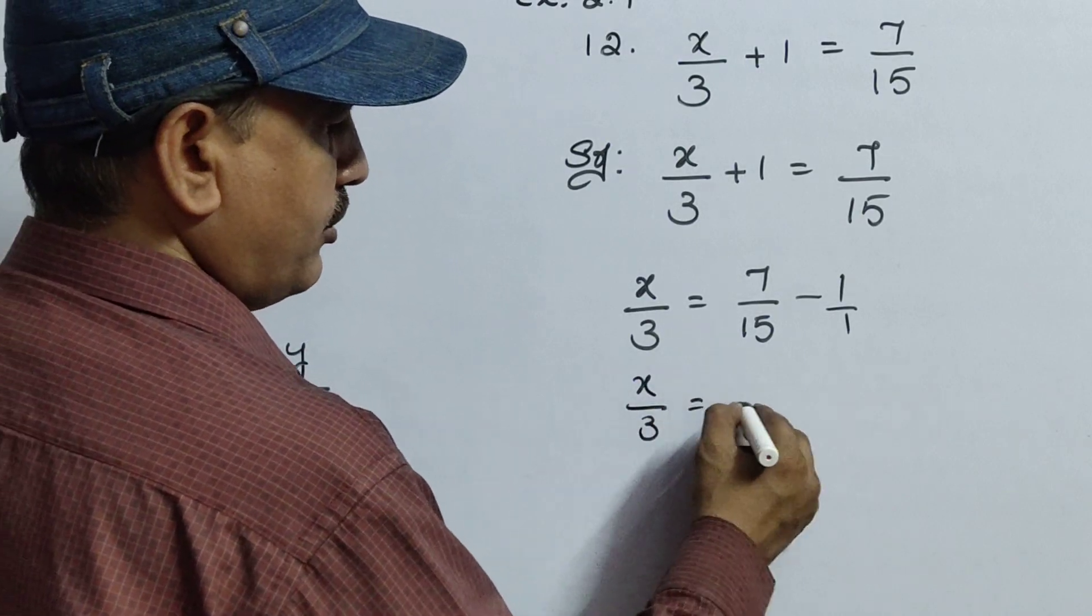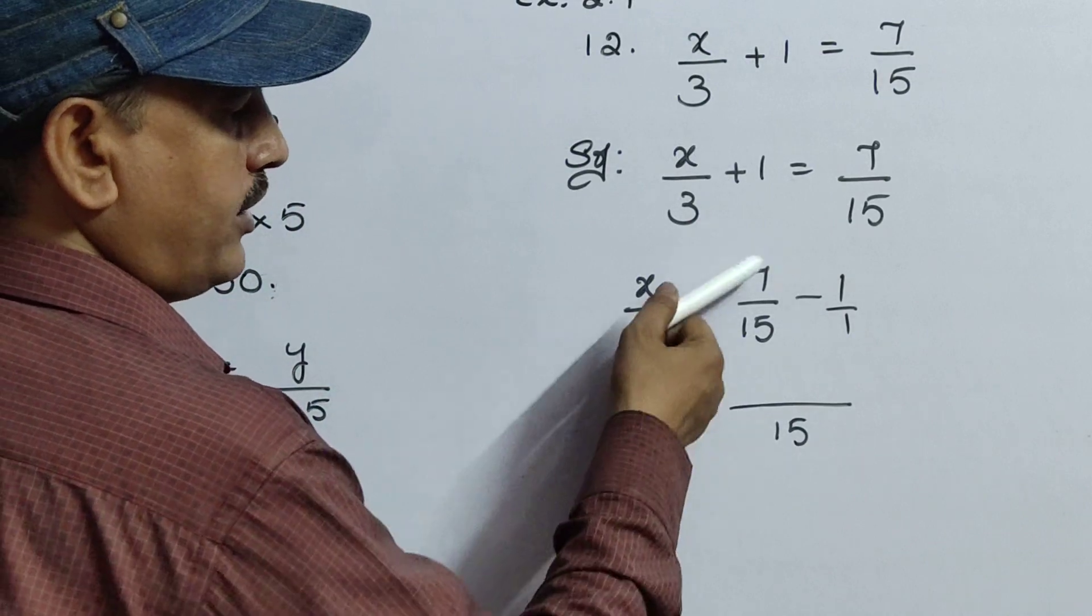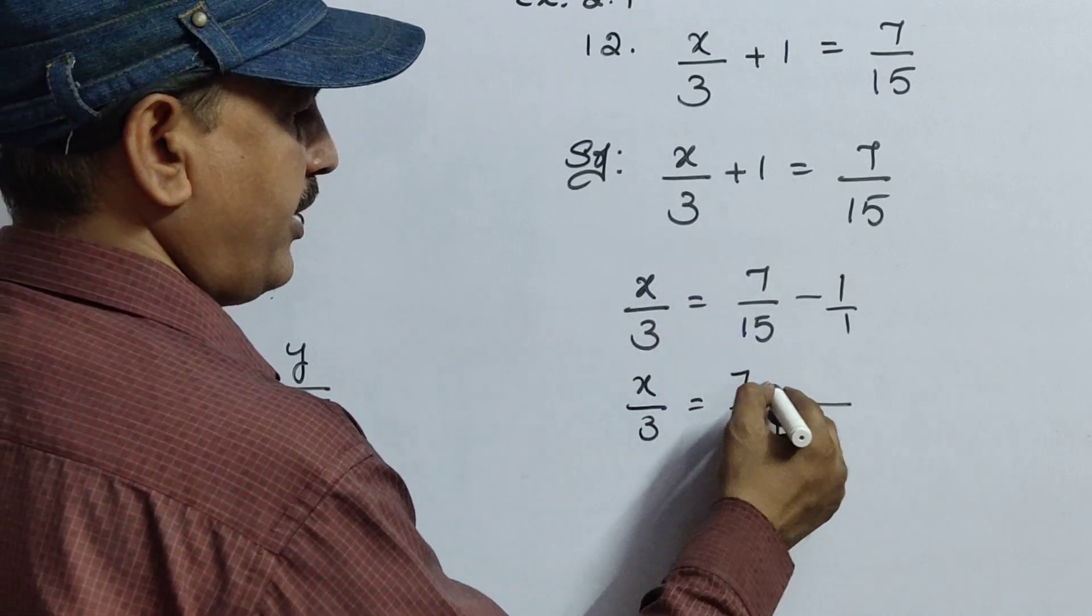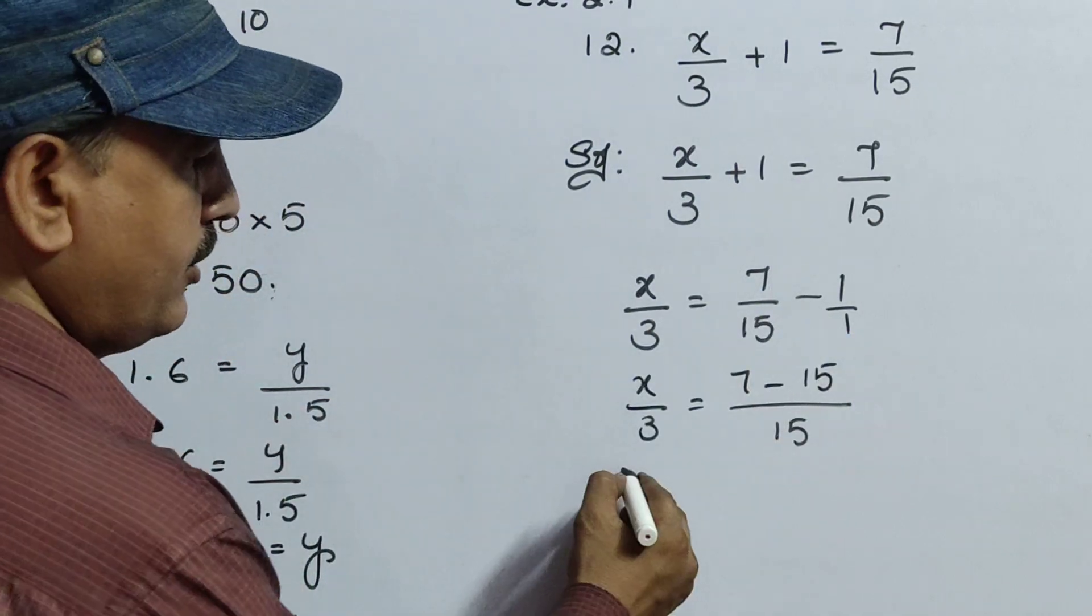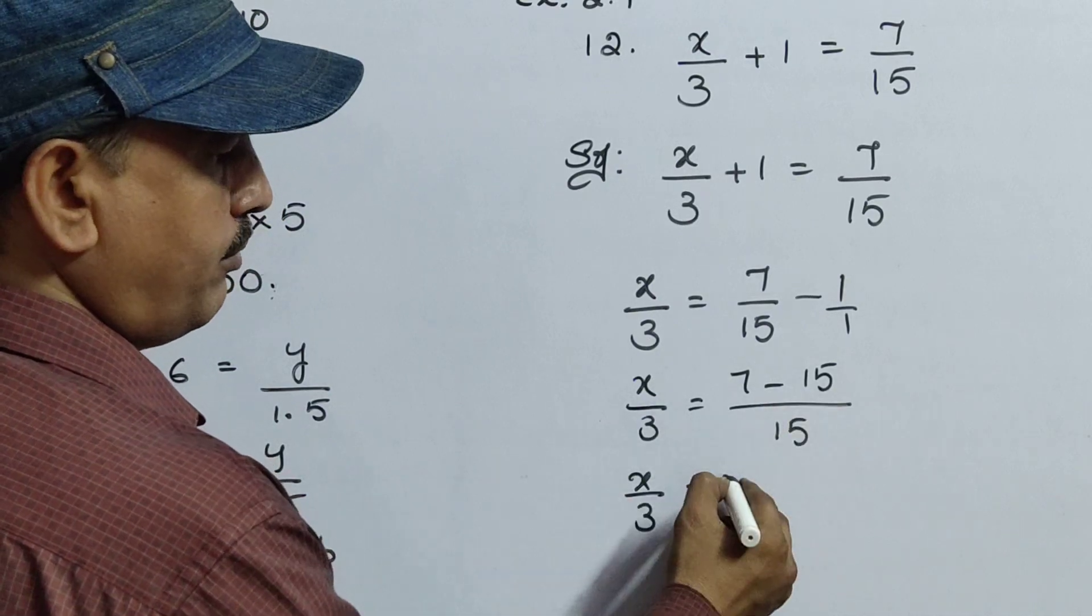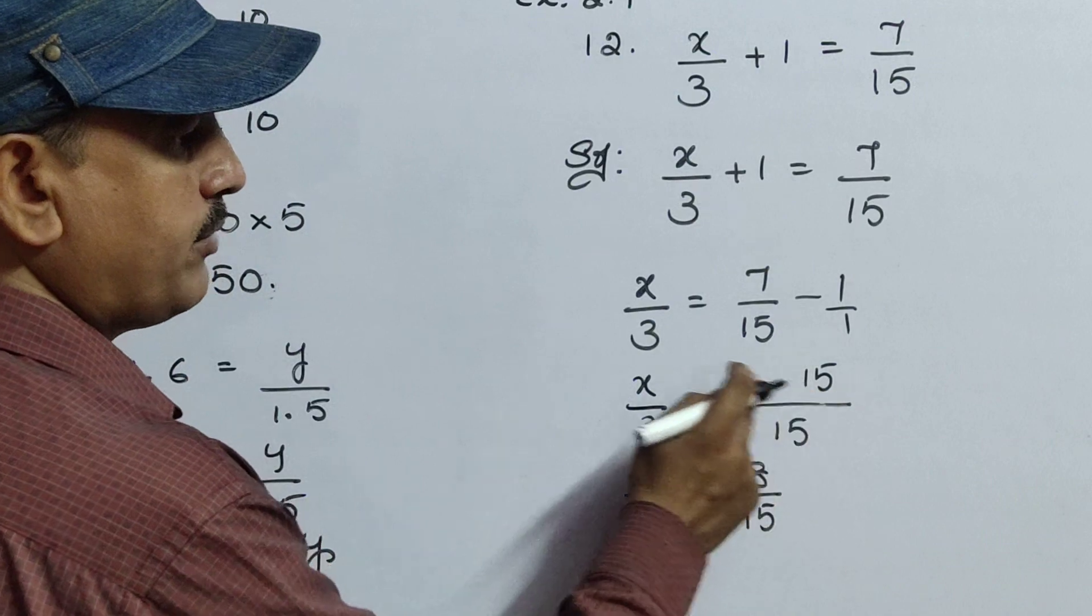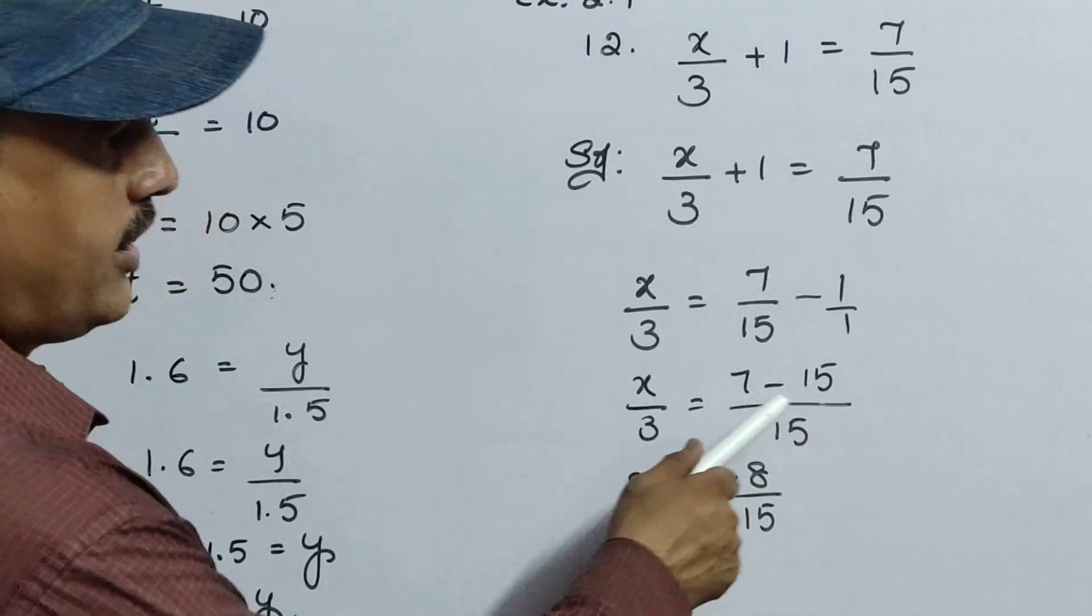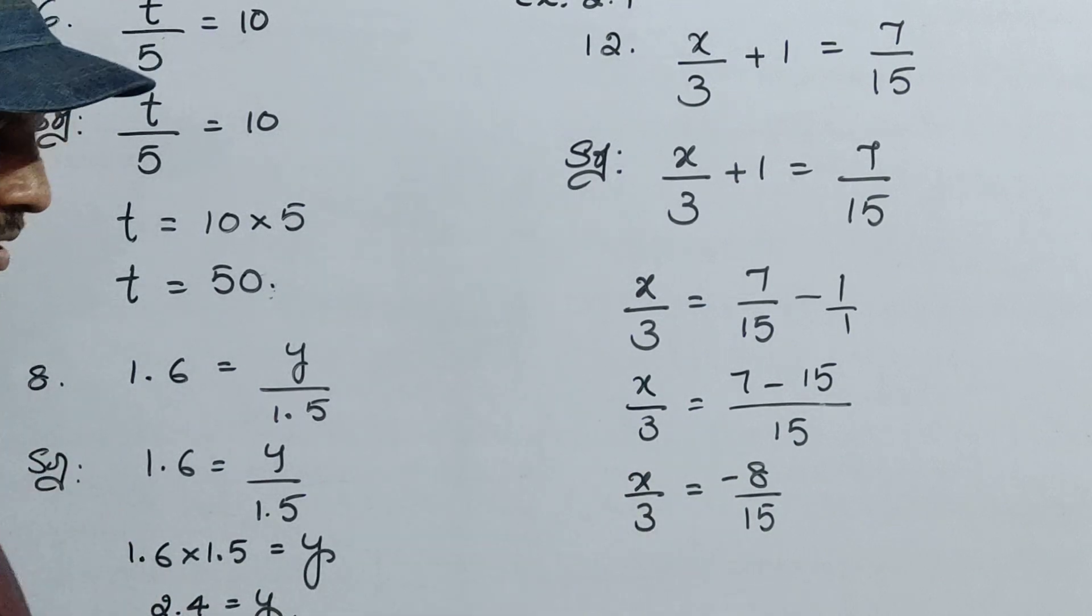X by 3 equals to LCM is 15 here. 1 times 7 is 7, 15 times 1 is 15. Now x by 3 equals to minus 8 by 15, because 15 minus 7 is 8. So here minus. 15 is big now, so that's why I applied minus symbol.